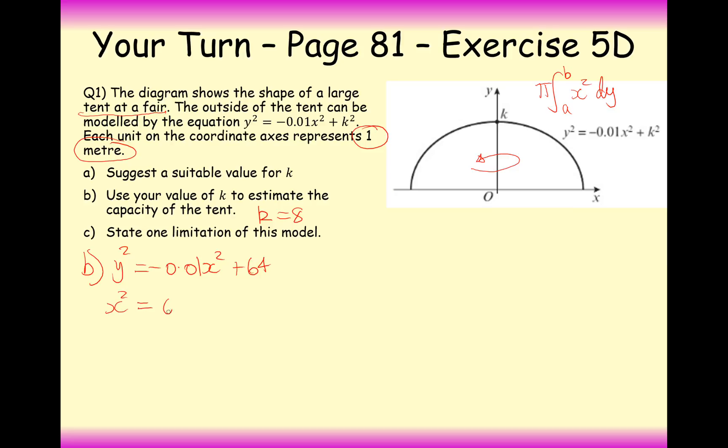So rearranging this I'm going to have 6400 minus 100y squared. And now I can substitute this straight into my formula. So it's the boundary on my y axis. So it's from 8 down to 0. So from 8 down to 0 of x squared. Now this is just going to be this expression here. Don't need to square anything because I have already got x squared on its own there.